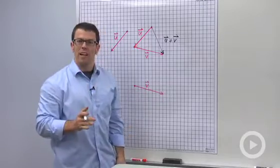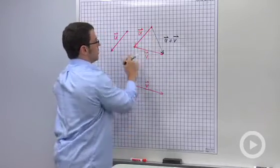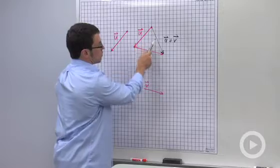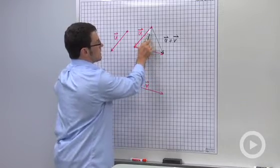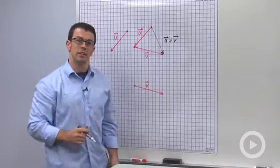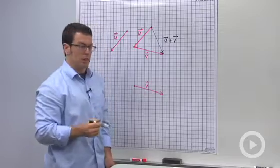So one method for adding vectors is the head to tail method. You put the vectors head to tail and you draw the resultant from the tail of the first to the head of the second. The second method is the parallelogram method.